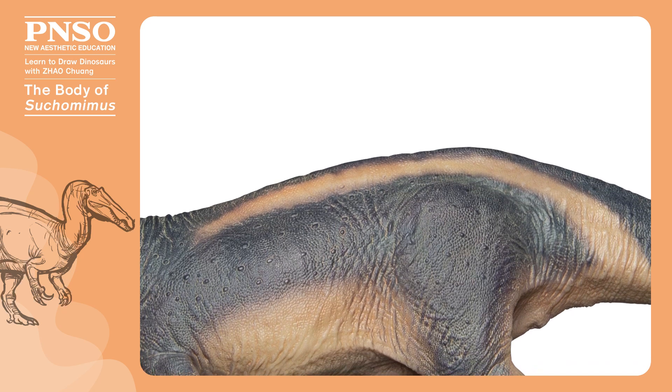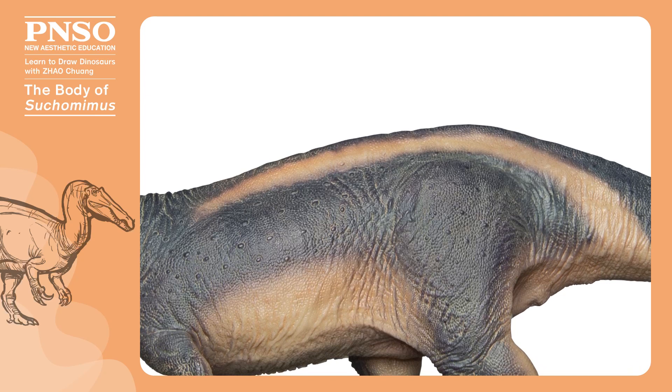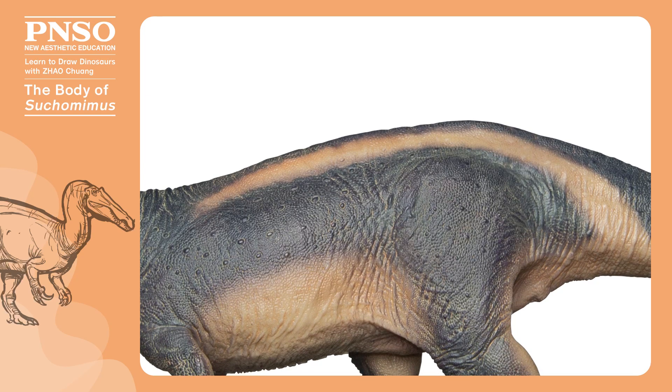Resembling spinosaurus, Suchomimus also had raised neural spines on its back, but these neural spines were not high enough to form a towering sail structure. They were just wrapped in muscles and looked very strong.